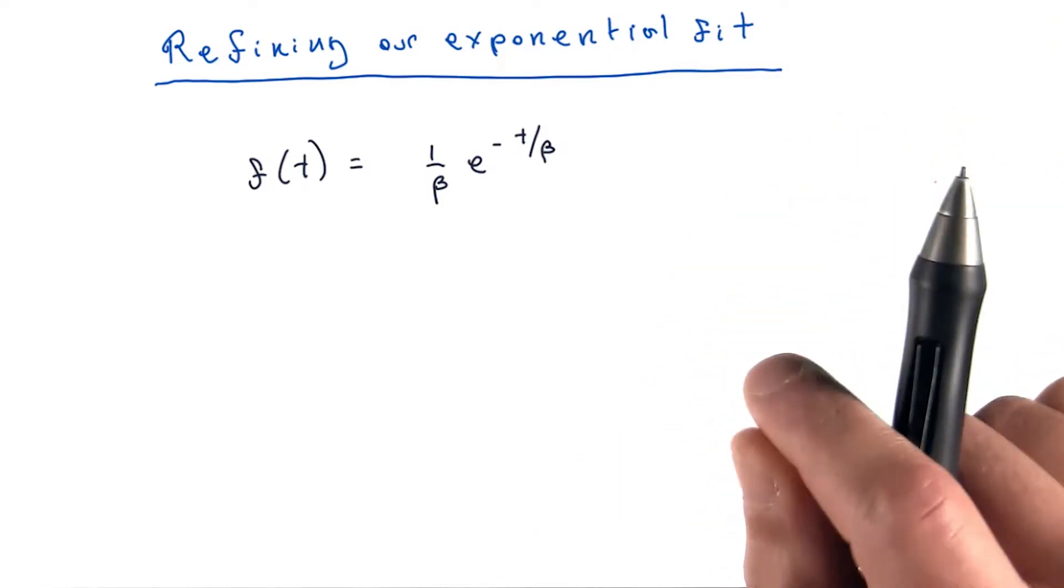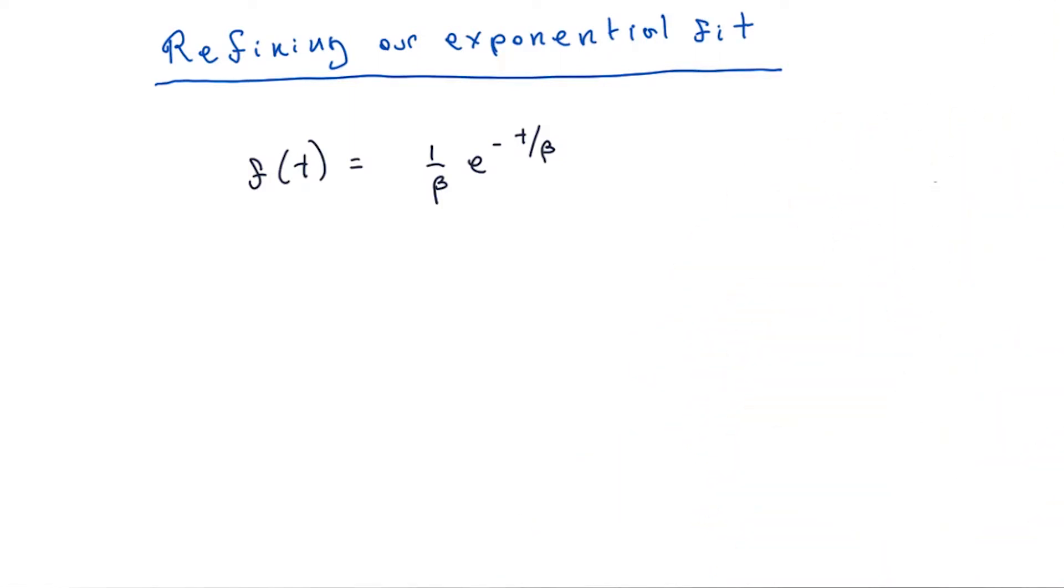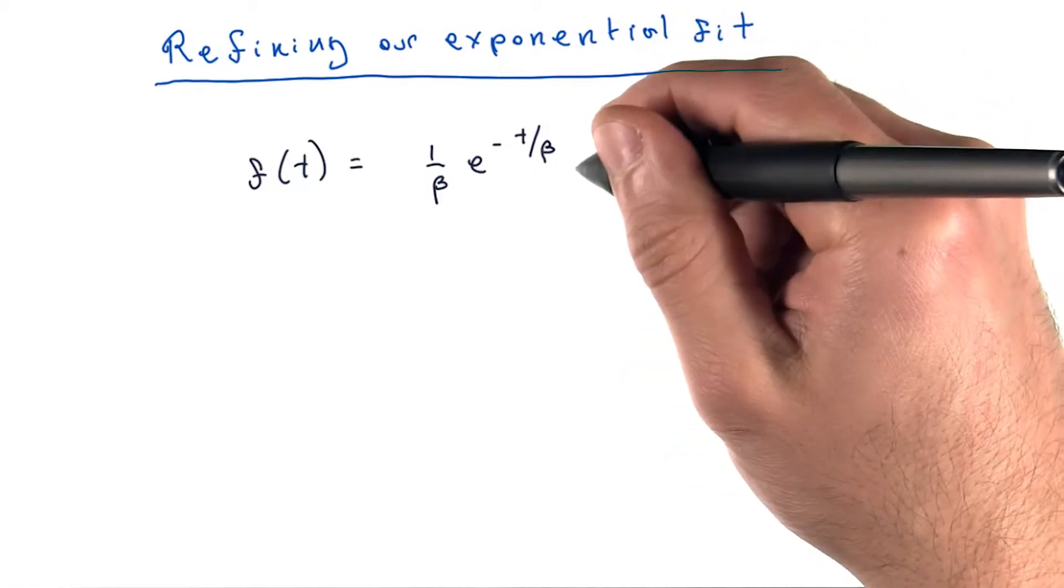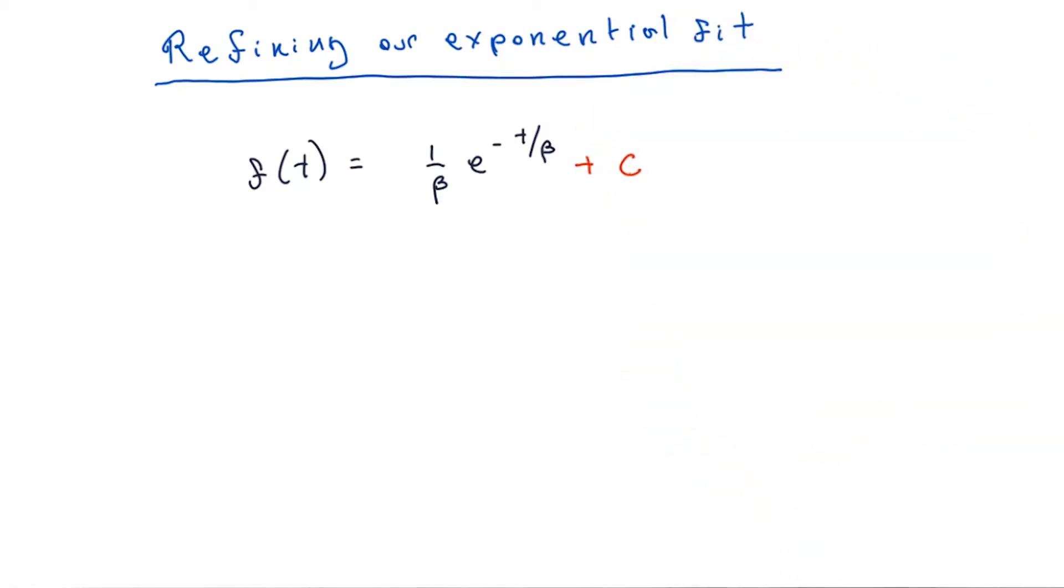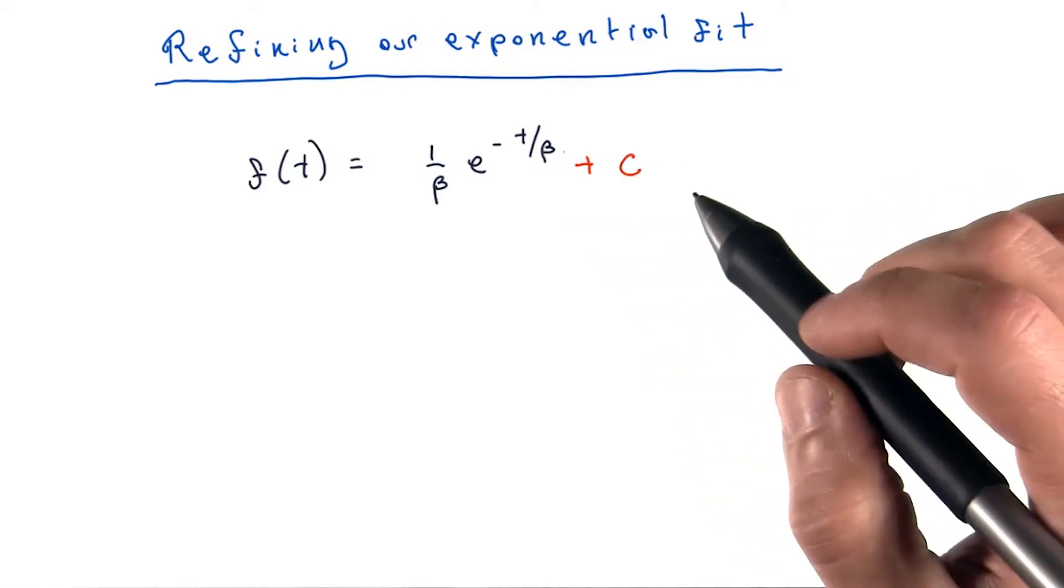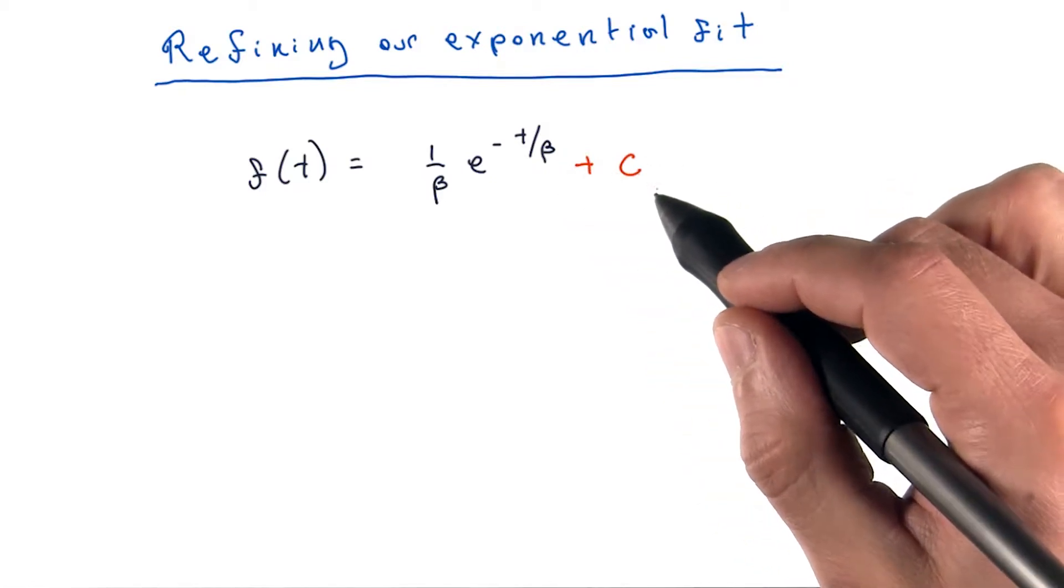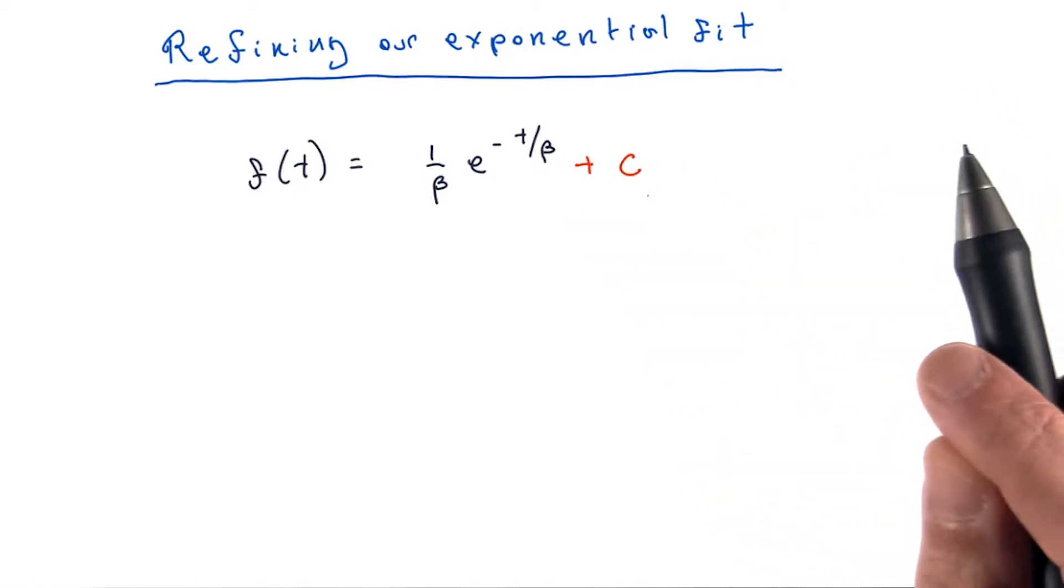Now our insight that we might be able to add an offset means that we're suggesting the model might look something like this instead. And then in addition to finding a value of beta, we should also look for a value of c that then makes it most likely to have produced the data that we saw.